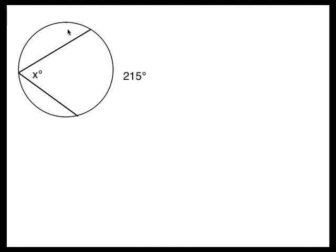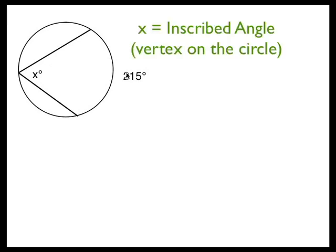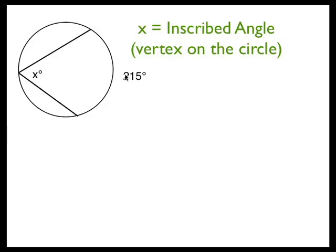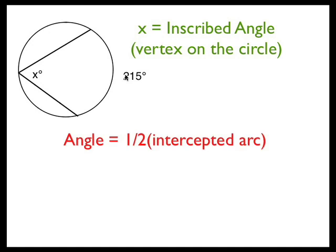Our first example asks us to find the measurement for angle X. Angle X is an inscribed angle with an intercepted arc of 215 degrees. An angle whose vertex is on the circle has a measurement of half the intercepted arc.